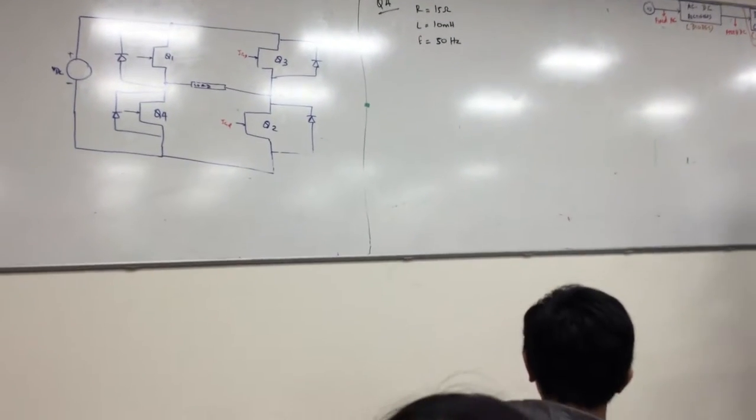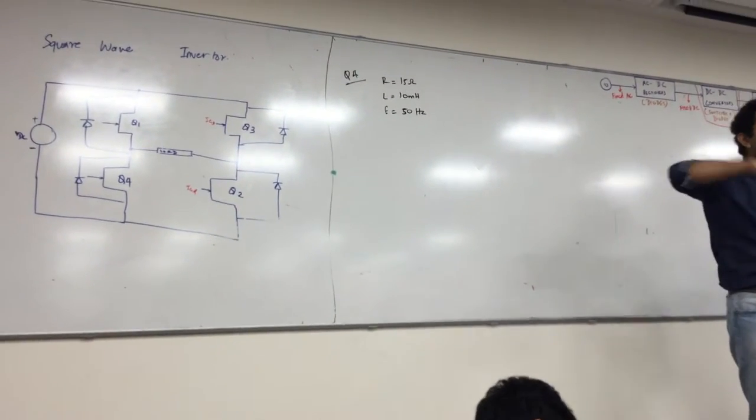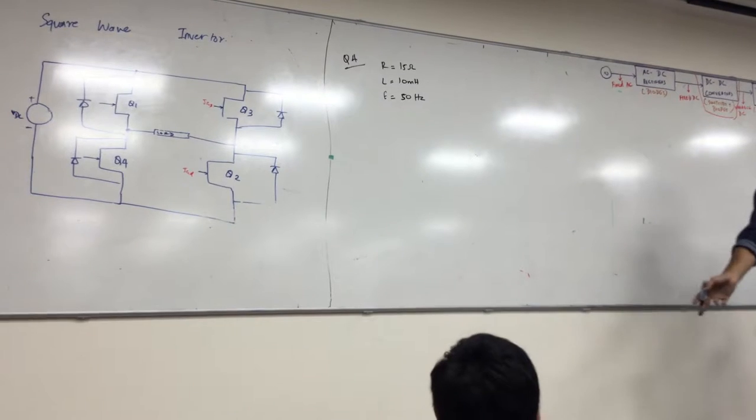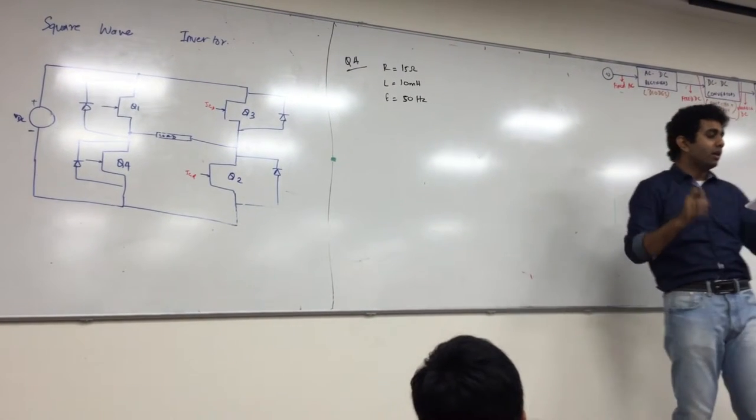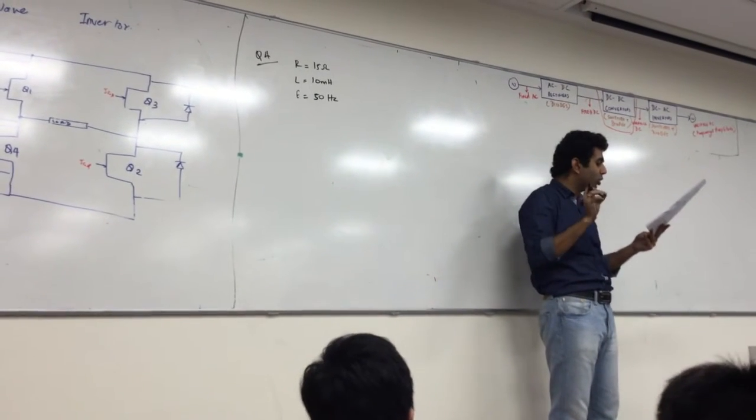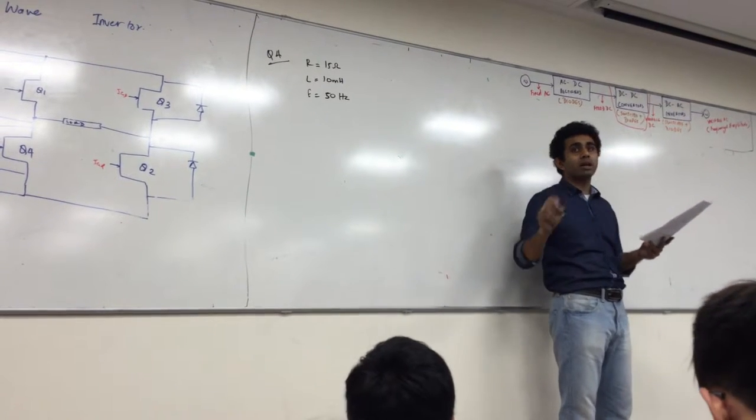The fundamental component of the output frequency is 50 Hz, it is a square wave, so the switching frequency as well as your fundamental frequency are the same. Determine the value of the DC source voltage that is required to establish a load current that has a fundamental component of 15 amperes RMS.